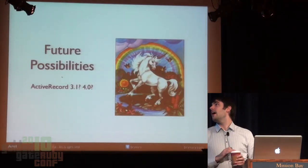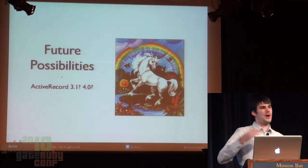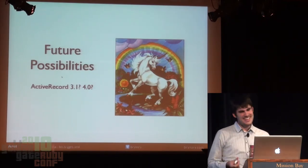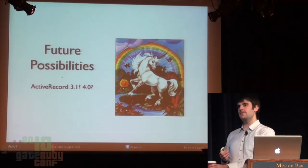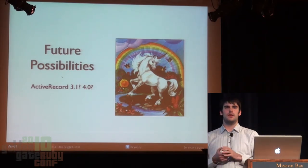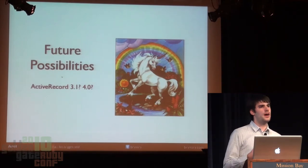Future possibilities — unicorns and rainbows. Now we're getting to code that will not run anywhere; it just came out of my head. Because AREL is a solid foundation of relational algebra that Active Record is now building on, there are some interesting concepts I'd like to explore in the timeline for something like Rails 4.0 — better ways we can improve our object-relational mapping functionality.